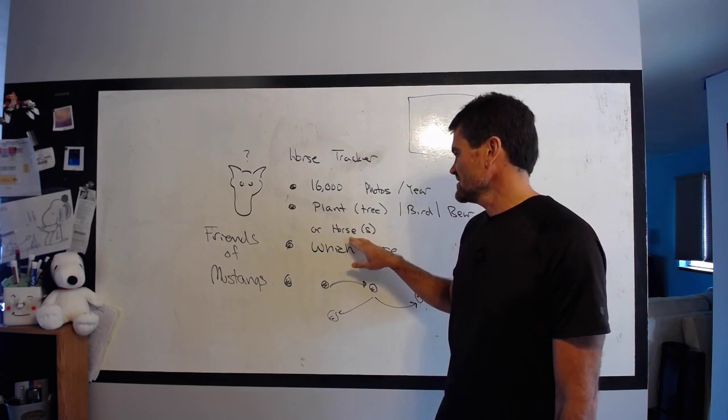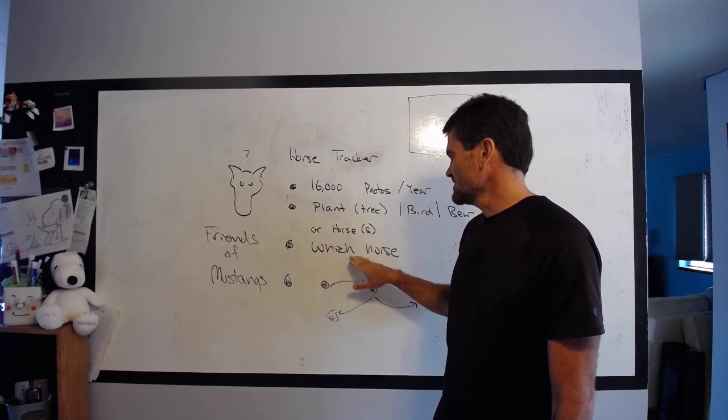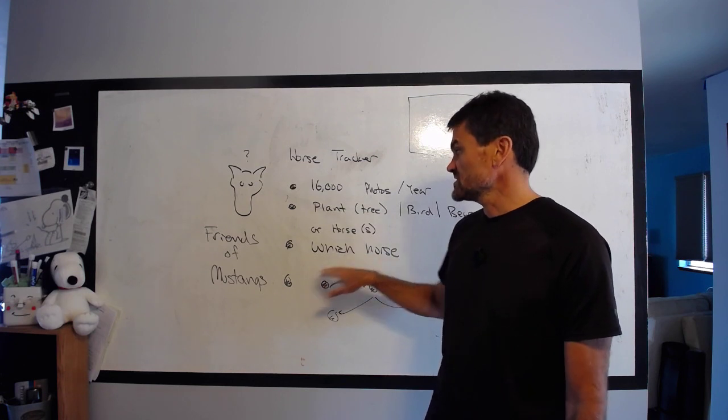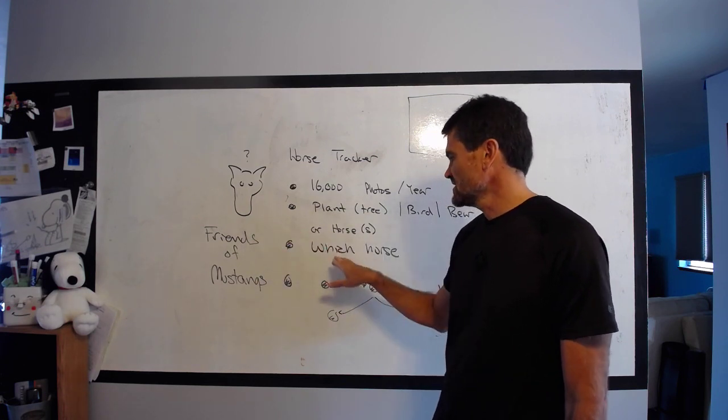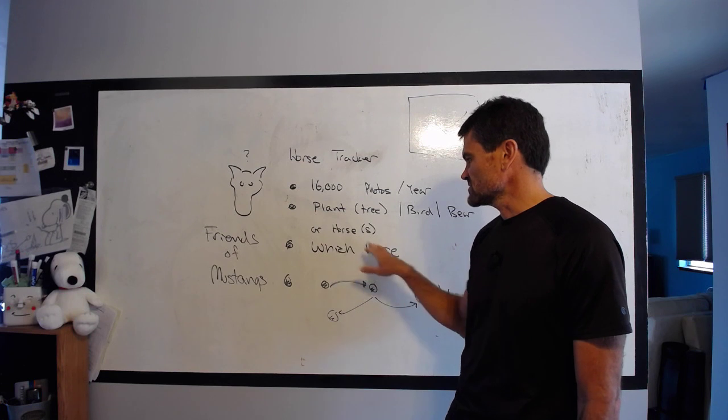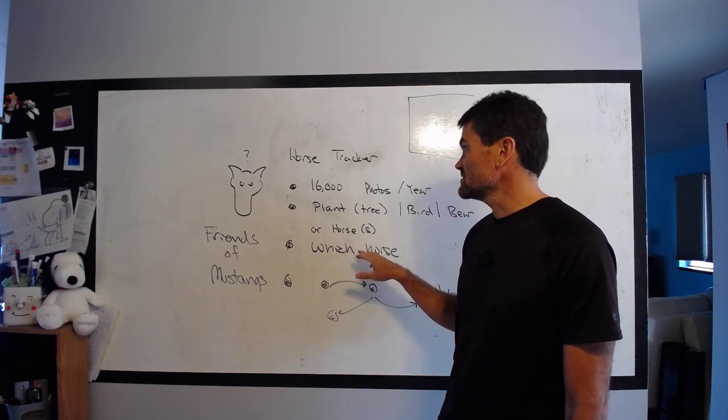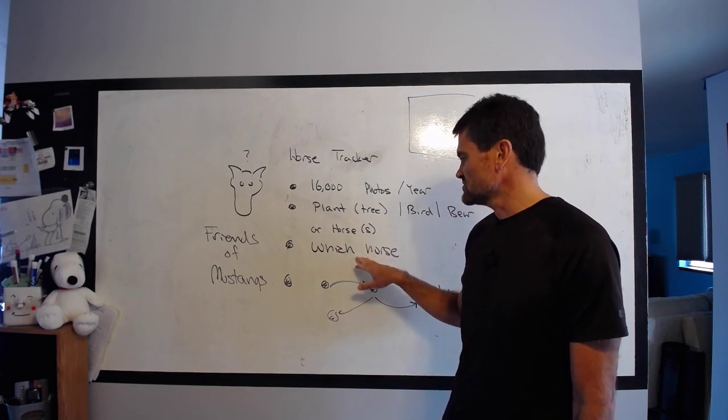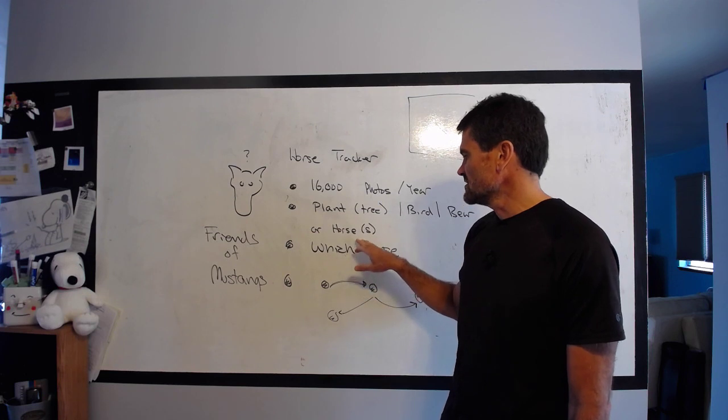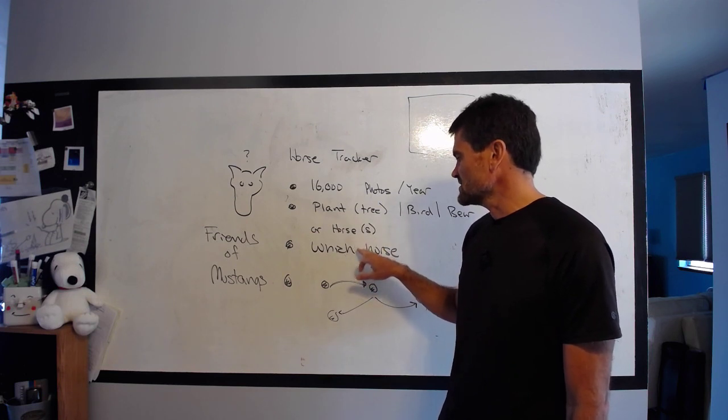And then after that, try to decide which horse is it. So there's about 150 horses to track. Maybe there's some human intervention at this stage to do some of the tagging, but in the end it would be great to be able to tag all the pictures for which horses are in which scene.